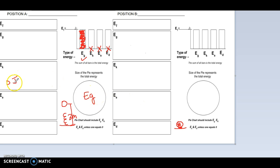So that leaves us knowing that the whole entire first bar for position A is all EG, so my entire pie chart is EG. I know there's no kinetic, no elastic, and no dissipated.